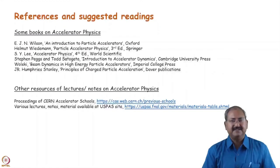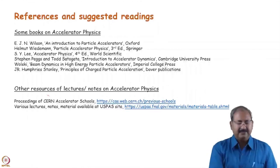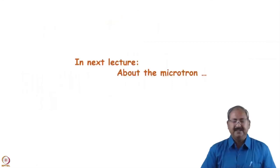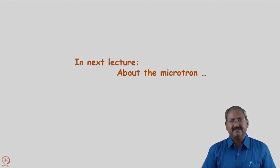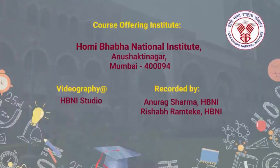Again, the references are same as was in the lecture one. So, you can go through these references for having the details on cyclotrons. One of the proceedings in CERN accelerator school is dedicated to linear and cyclotron. So, you will get very details of cyclotron in that proceeding. In the next lecture, we will see one more accelerator that is microtron. Thank you.